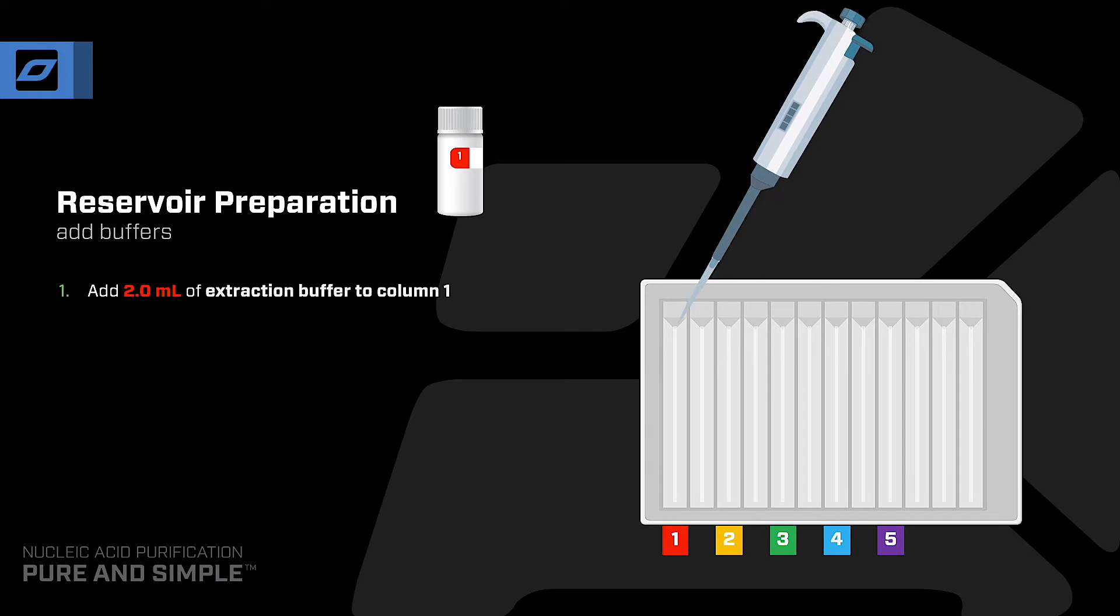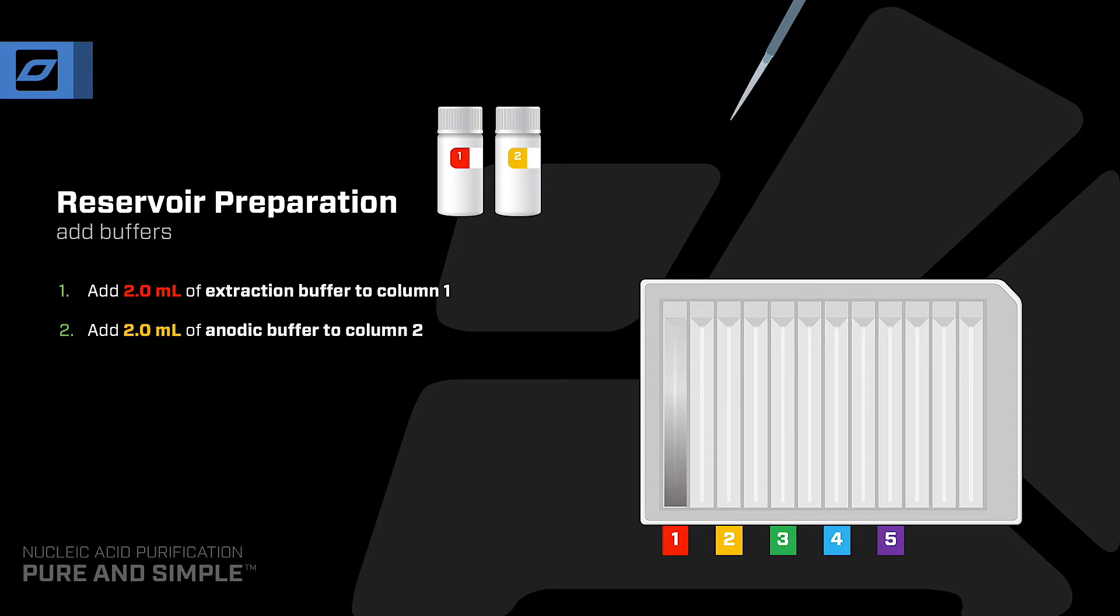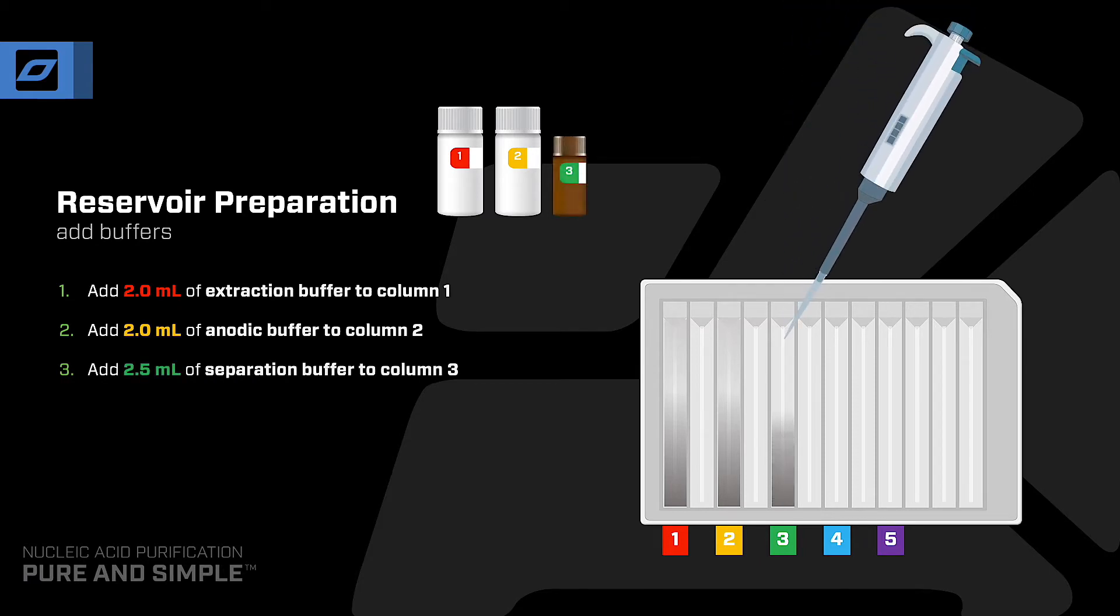Column 1 contains 2.0 milliliters of extraction buffer. Column 2 contains 2 milliliters of anodic buffer. Column 3 contains 2.5 milliliters of separation buffer.